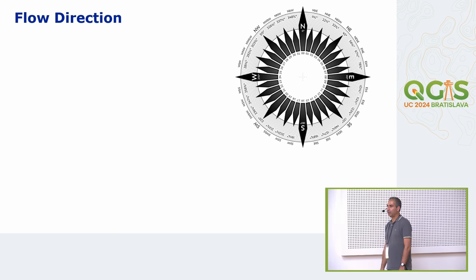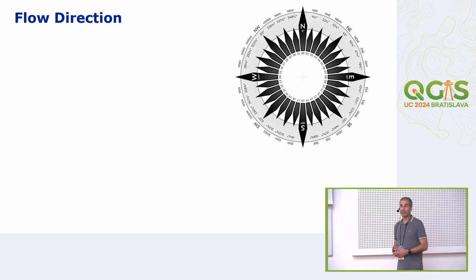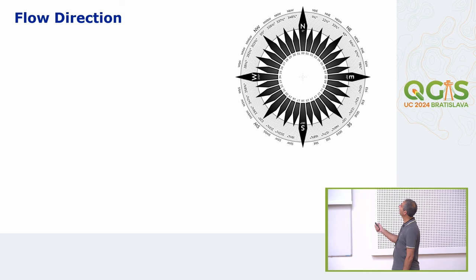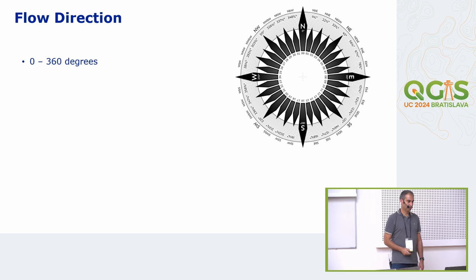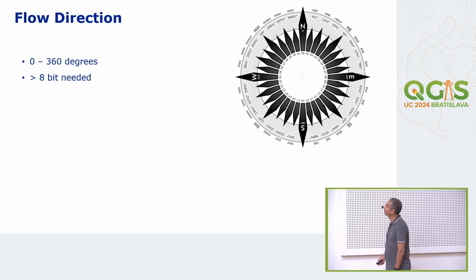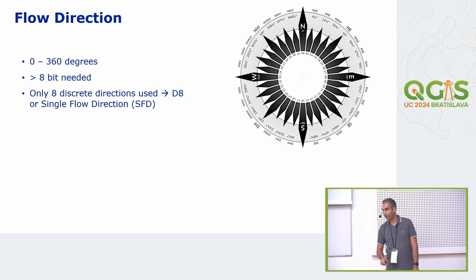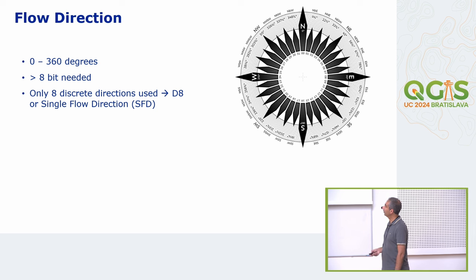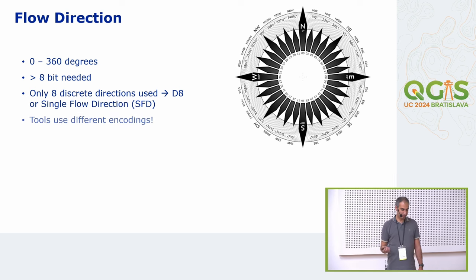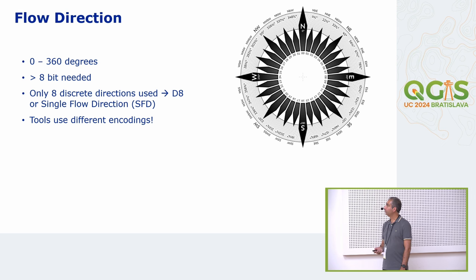After filling sinks, you calculate the flow direction. Flow direction is a compass direction, but in a raster we can only store values. We only use eight directions because we look at eight neighboring cells, so we only need eight discrete values. This is called the D8 flow pointer raster. The problem is that different tools encode these directions differently. ArcGIS uses 1, 2, 4, 8; PC Raster uses the numeric pad on your keyboard; SAGA and GRASS do it differently. If you want to mix tools, you need to reclassify the flow directions, otherwise you get really wrong results.